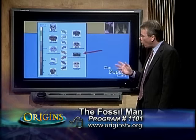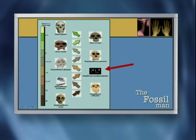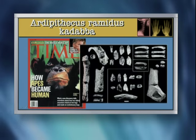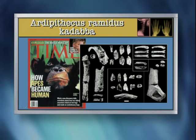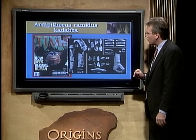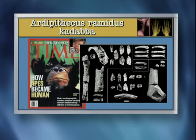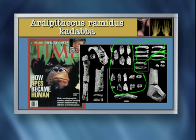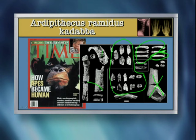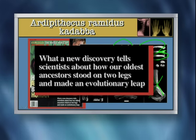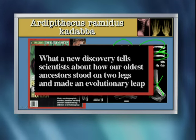The next creature on our list is Ardipithecus ramidus cadaba. He actually made the front cover of Time Magazine recently - 'How Apes Became Human.' You can imagine how many young people were influenced by that cover. And yet on the right-hand side of the screen, you see precisely what fossils they found: some teeth, a toe bone, some finger bones, a femur, a mandible, and some long bones. That's all they have. From that, the subtitle reads: what a new discovery tells scientists about how our oldest ancestors stood on two legs and made an evolutionary leap.